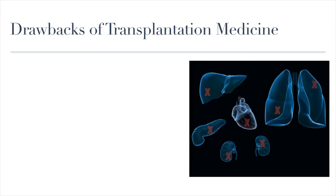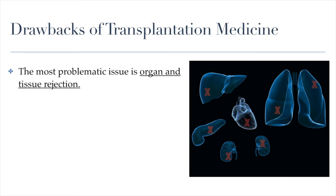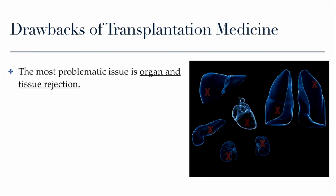So what are the drawbacks of transplantation medicine? Why isn't this just a perfect solution? The main drawback is organ and tissue rejection. We talked about how different body tissues have these tiny molecules or markers called antigens, and how our bodies can produce antibodies that recognize self and non-self. When it comes to organs, it is highly improbable that you will ever find a donor with the exact same tissue markers as the patient, so there is always a chance of rejection — the immune system recognizing the transplanted organ as non-self and mounting an immune response to attack it.